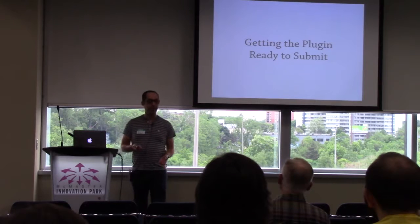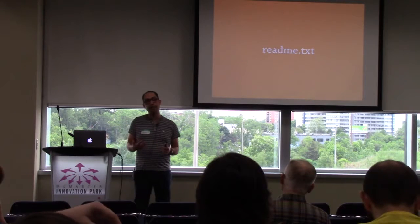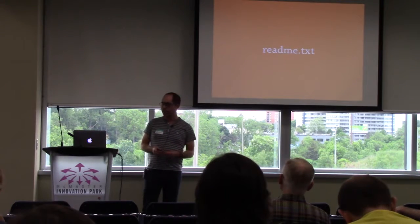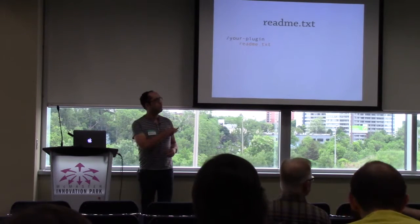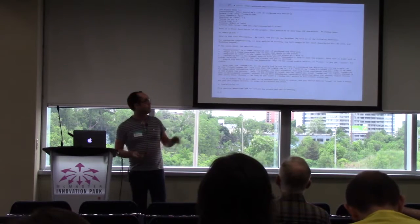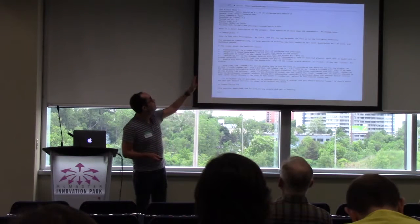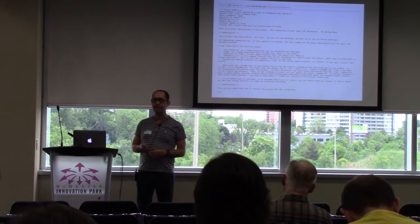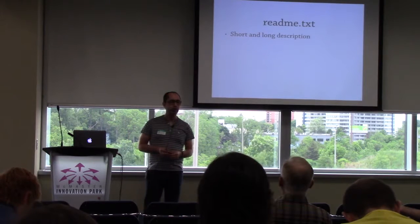The first thing you need to get the plugin ready to submit is adding a readme.txt file — literally a readme.txt file that you put inside your plugin folder. This is an example, obviously hard to read, but it's literally a plain text file. On wordpress.org, you can just Google 'wordpress readme.txt example' and find it.